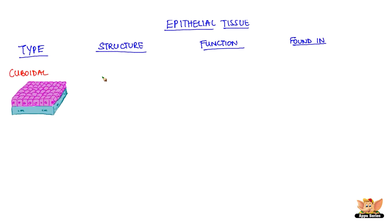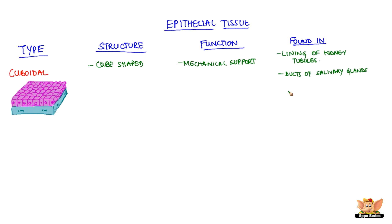Cuboidal epithelium has cube-shaped cells and helps in mechanical support. They are found in the lining of kidney tubules and ducts of salivary glands.